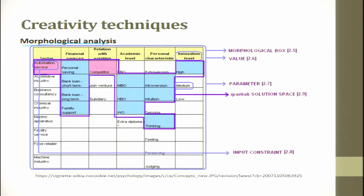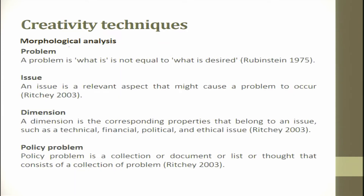In morphological analysis, you look at sectors, finance sources, and see relationships with existing categories such as academic, personal, and innovation. You put in the parameters, put in the solution space, look at the morphological box, and put in input constraints. These constraints are what you work with — this is the morphological block, and you have values for it, which you then use for solving.